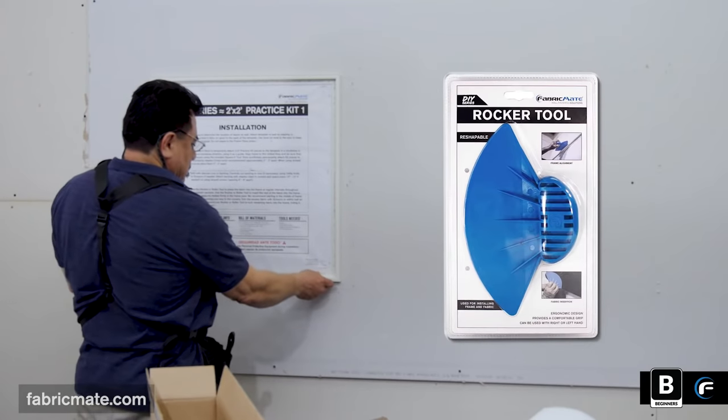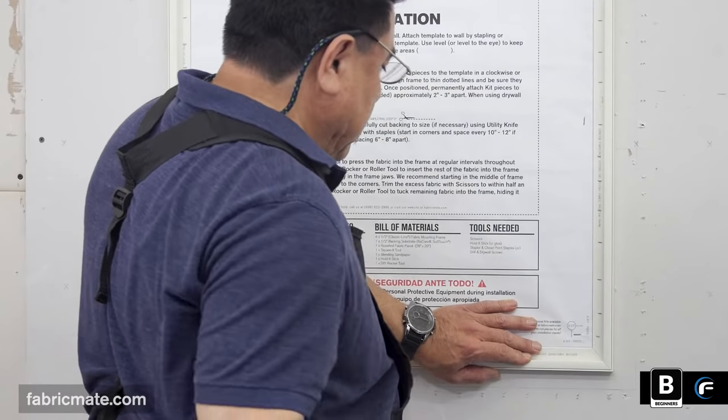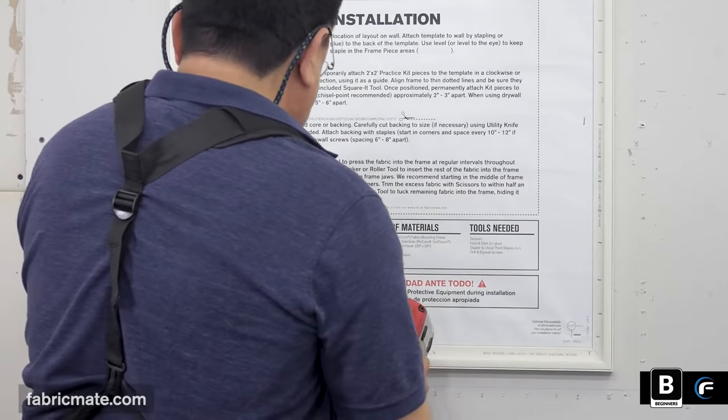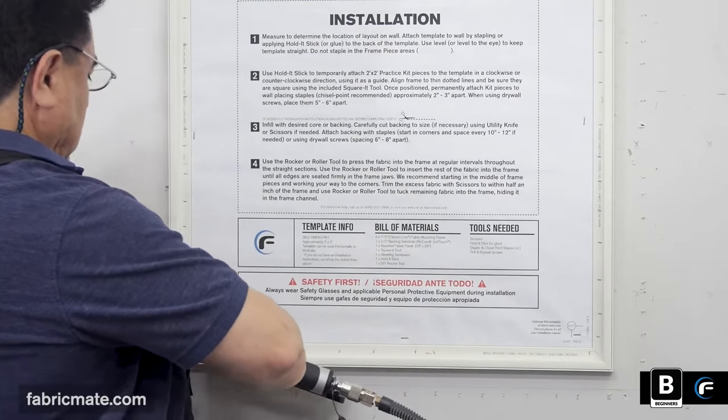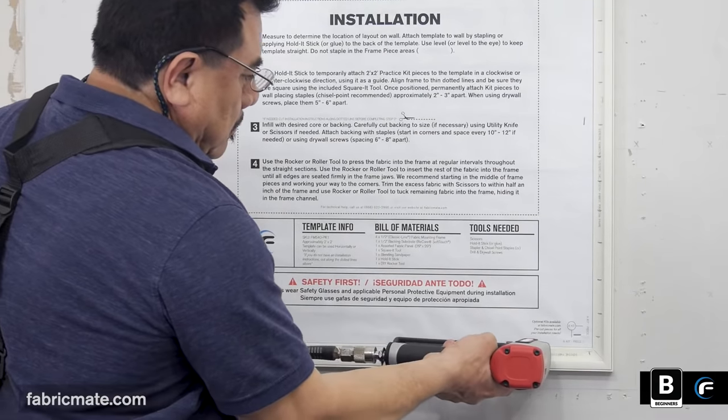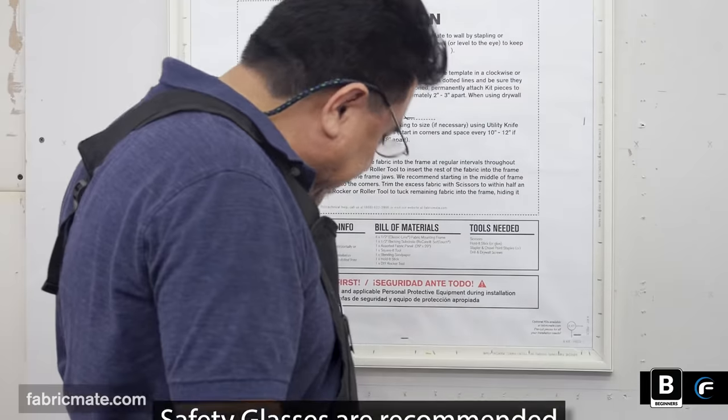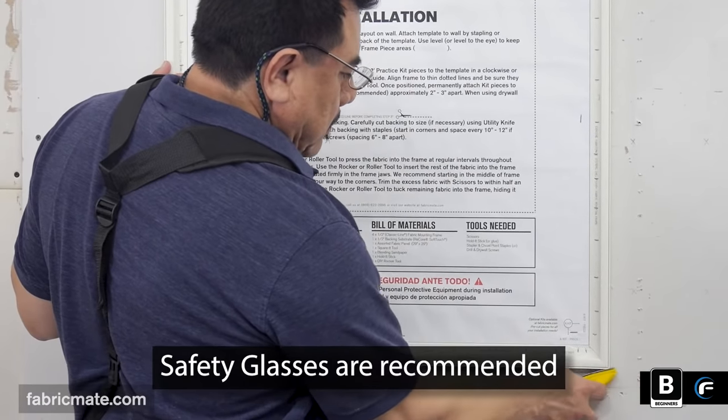This is the tool that you will be getting with the kit. This is the DIY rocker tool. Very adequate for this practice kit as well as small panels in your home or office commercial setting. So you will see as he continues on, quick and easy. The fabric mounting frame is now installed. Make sure you wear safety glasses.